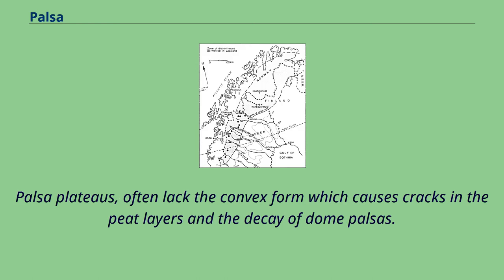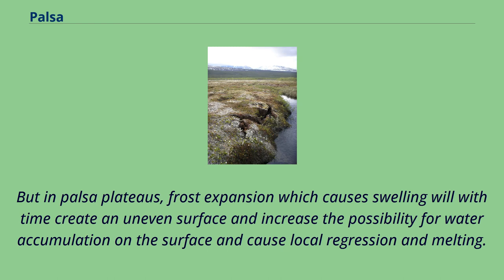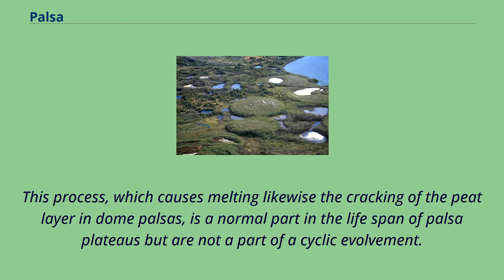Palsa plateaus often lack the convex form which causes cracks in the peat layers and the decay of dome palsas. But in palsa plateaus, frost expansion which causes swelling will with time create an uneven surface and increase the possibility for water accumulation on the surface and cause local regression and melting. This process, which causes melting likewise the cracking of the peat layer in dome palsas, is a normal part in the lifespan of palsa plateaus but is not a part of a cyclic evolvement.